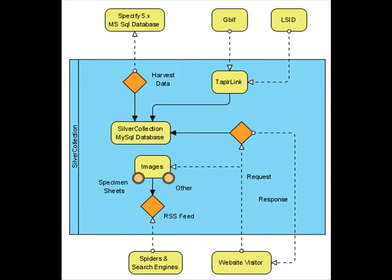Silver Collection is not a collection management software. Instead, it uses its own Darwin Core version 1.4 compliant MySQL database to serve the data. A harvester is used to synchronize the authoritative database to the software's database.